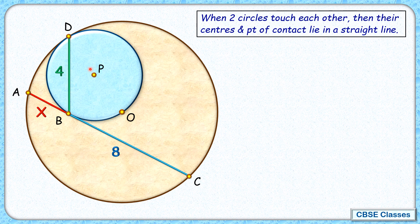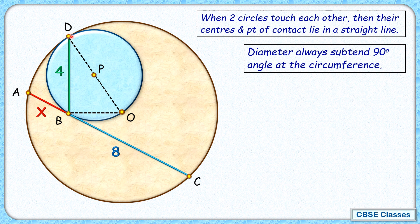Now this DO is passing through the center of the blue circle, so DO is the diameter of the blue circle. Let's join OB here. Now with respect to this blue circle, DO is the diameter, and we know by theorem that for any circle, diameter always sustains 90 degree angle at the circumference. So in this blue circle, DO diameter will sustain an angle of 90 degrees at point B.